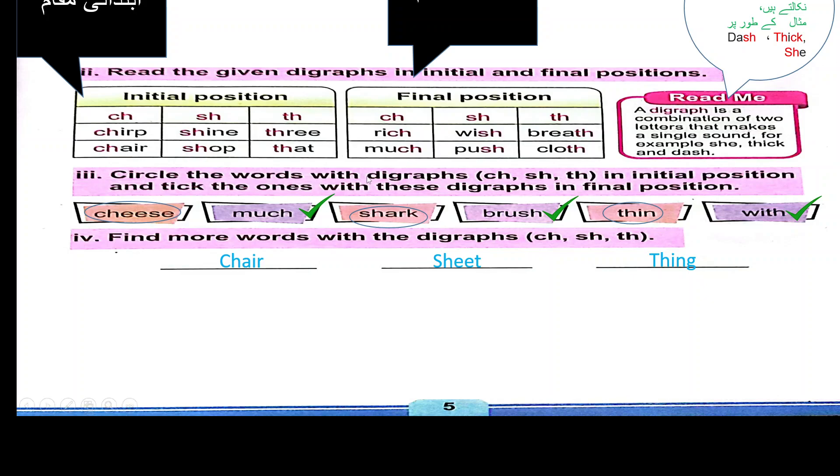Circle the words with diagraphs CH, SH, TH in initial position and tick the ones with these diagraphs in final position. Much, shark, brush, pin, width, cheese. Cheese should be circled because it is in initial position. CH is at the beginning. So, this is initial position. We will circle this.